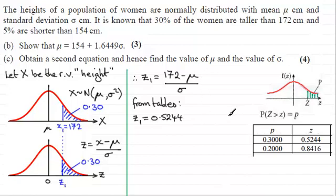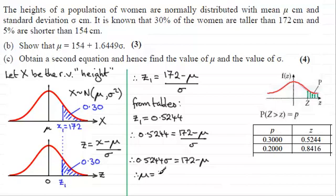And we can substitute that into this equation here. And so therefore that's going to give us 0.5244 is equal to 172 minus μ, then divided by σ. And it's just a question of rearranging this now. So I'm going to multiply both sides by σ. So you've got 0.5244 times σ equals 172 minus μ. And then if I add μ to both sides and subtract this term from both sides, we end up with μ equaling 172 minus 0.5244σ.